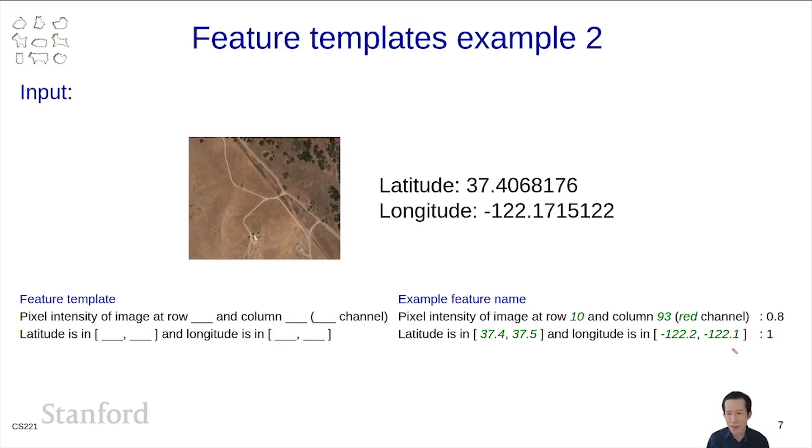If you remember piecewise constant features, this is an example of piecewise constant features that carves up the world into a bunch of regions and has a feature firing if the lat long is in a particular region or not.